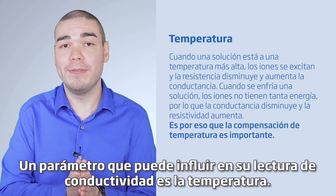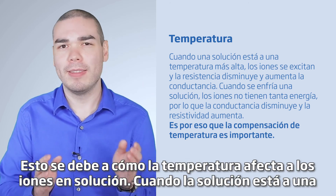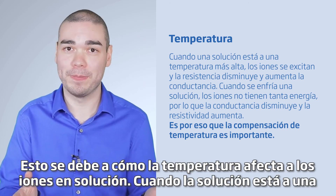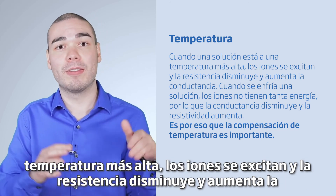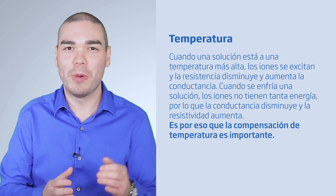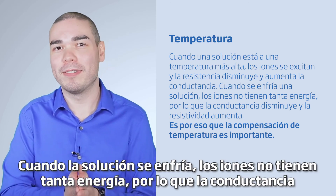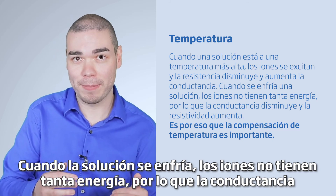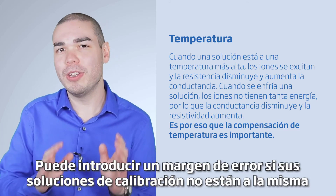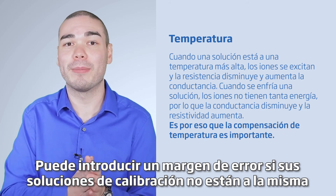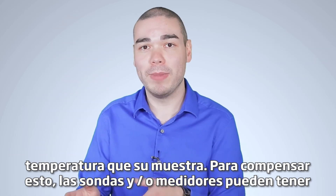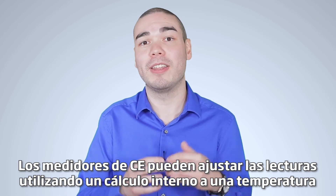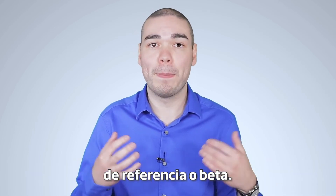One parameter that can influence your conductivity readings is temperature, due to how temperature affects ions in solution. When a solution is at a higher temperature, the ions become excited and resistance drops while conductance increases. When a solution is cooled, the ions do not have as much energy, so conductance drops and resistivity increases. You can introduce a margin of error if your calibration solutions are not the same temperature as your sample. To compensate for this, probes and/or meters can have a temperature sensor, and EC meters can then adjust the readings using an internal calculation to a reference temperature, or beta.